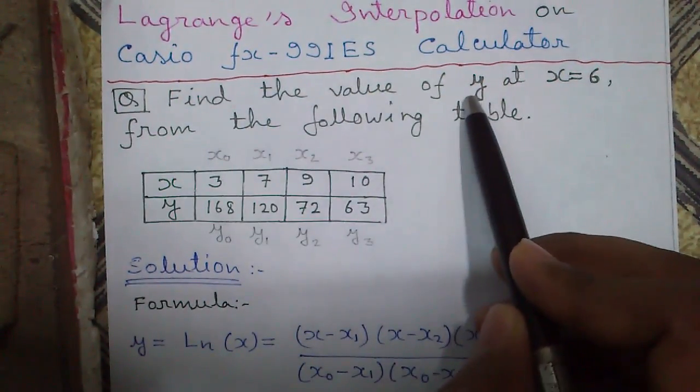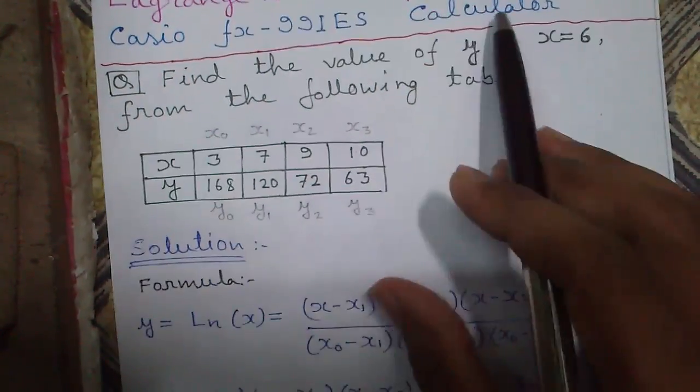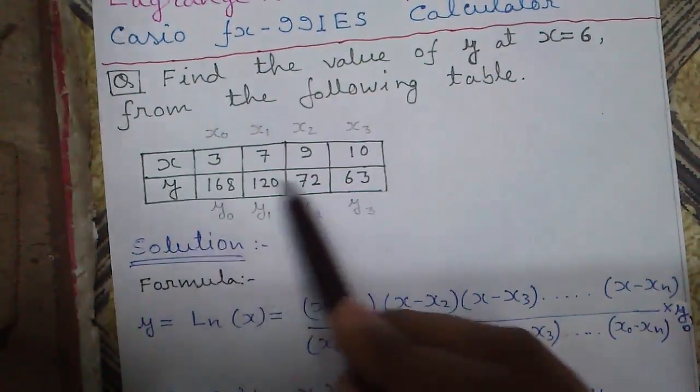For now, our question is find the value of y at x equals 6 from the following table. The table is given in the question, these are all x values and these are y values.